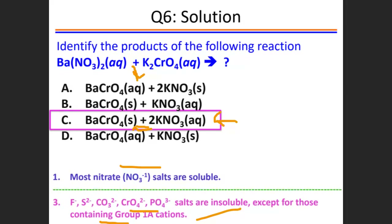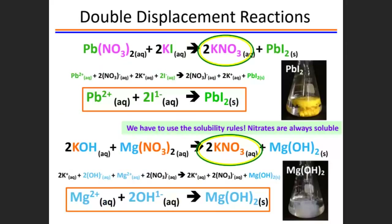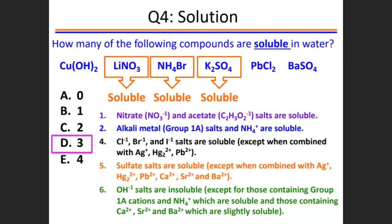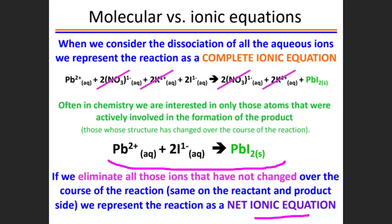If you don't know the solubility rules, you will have trouble writing complete ionic equations. That is why the solubility rules are given. Barium is one of the exception metals — look back at the rules. Lead, mercury, and barium are the exceptions. If you study the rules, you can easily determine which compounds are soluble and which are insoluble.